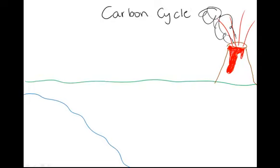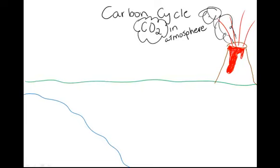We're going to start with carbon in the atmosphere. Carbon exists in the atmosphere as a gas form when it buddies up with oxygen and makes carbon dioxide. I'm going to make a little gas cloud here because carbon dioxide is a gas in the atmosphere. One of the ways that carbon gets into the atmosphere as carbon dioxide is when we burn things — so when we have our volcano erupting, it's going to put carbon dioxide into our atmosphere. Let's label this volcanic activity, and label this as a gas in our atmosphere.